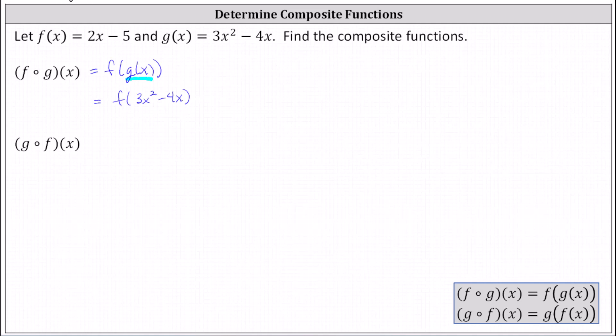Again, we substituted g of x with the function rule of 3x squared minus 4x, and this is now the input for the function f. Since f of x equals 2x minus 5, to determine f of 3x squared minus 4x, we substitute 3x squared minus 4x for x in f of x.